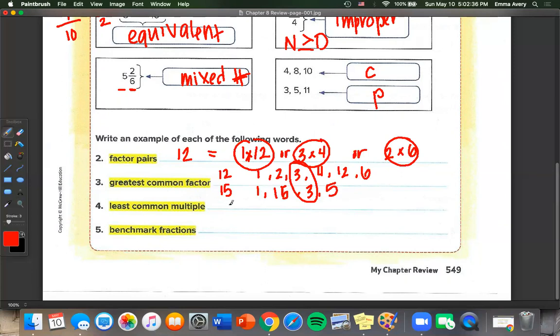What about least common multiple? So let's pick two other numbers. I'm going to pick 2 and 4. So let's find our multiples. 2, 4, 6, 8, 10, and so on. And for 4, well 4, 8, 12, 16, and so on. So our least common multiple is going to be 4.